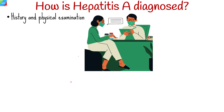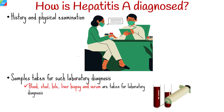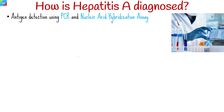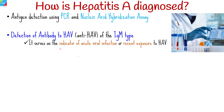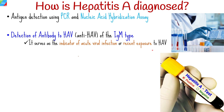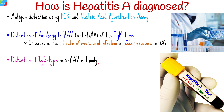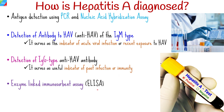Diagnosis usually begins with history and physical examination to elicit signs and symptoms. Samples such as blood, stool, bile, liver biopsy, and serum are taken for laboratory diagnosis. Tests include antigen detection using PCR and nucleic acid hybridization assay. Detection of IgM-type antibody to hepatitis A is detected early after infection and is present by onset of clinical disease, serving as an indicator of acute viral infection. IgM peaks shortly after infection and becomes undetectable by 8 to 12 weeks. In contrast, IgG-type anti-hepatitis A gradually rises and persists indefinitely, serving as a useful indicator of past infection or immunity. Antibody detection can also be done by enzyme-linked immunosorbent assay (ELISA).